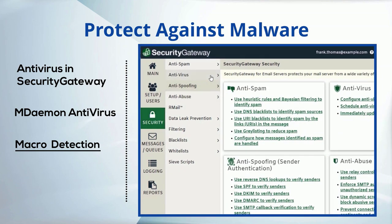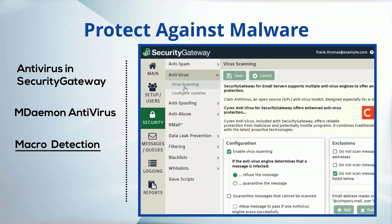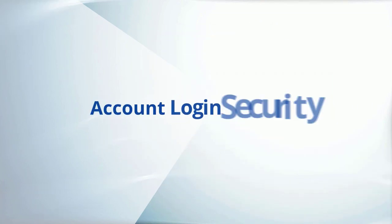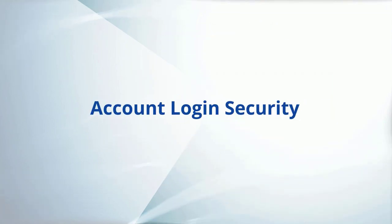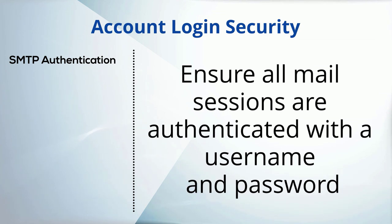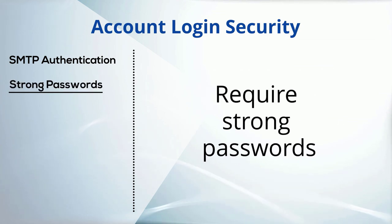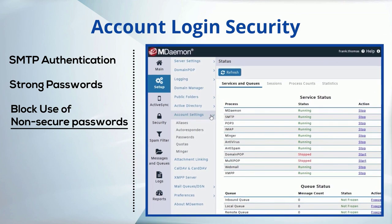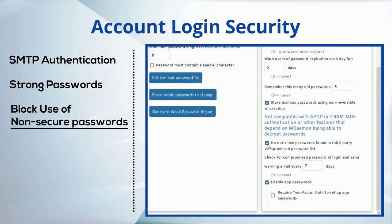Both MDaemon Antivirus and Security Gateway have a setting to block attachments containing macros. Protect your users from hackers by requiring them to use SMTP authentication to ensure that all mail sessions are authenticated with a username and password. Use strong, hard-to-guess passwords, and don't allow users to use any passwords that have been found in a data breach. Both MDaemon and Security Gateway have an option to prevent compromised passwords from being used.